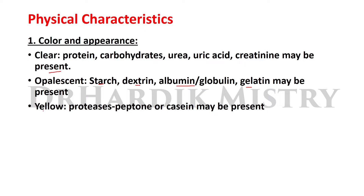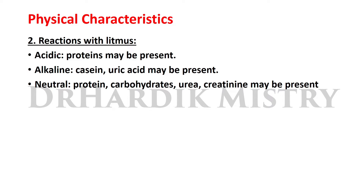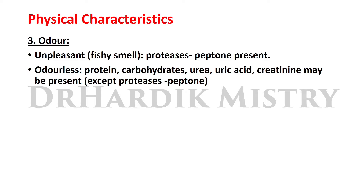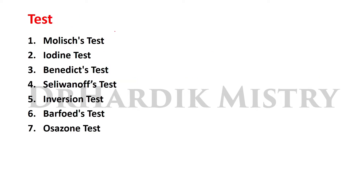When the solution is yellow in color, there may be presence of proteoses, peptones, or casein. Reactions with litmus: acidic reaction may indicate proteins; alkaline reaction includes casein or uric acid; neutral reaction includes proteins, carbohydrates, urea, and creatinine. Odor: unpleasant feces smell indicates proteoses and peptones; odorless solutions include proteins, carbohydrates, urea, uric acid, and creatinine. The carbohydrate tests include Molisch, iodine, Benedict, Selivanoff, inversion, Barfoed, and osazone.